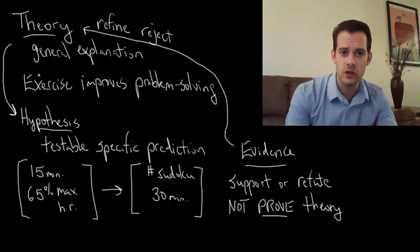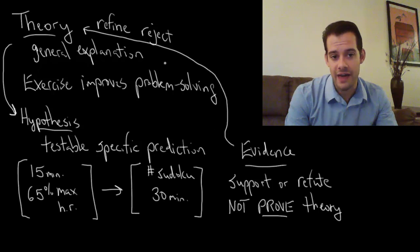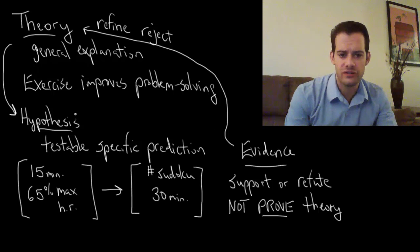And so we have this sort of loop where we go from a theory to a hypothesis to the evidence. And then we bring it back, we refine the theory, and this allows us to gradually improve our knowledge of the world.